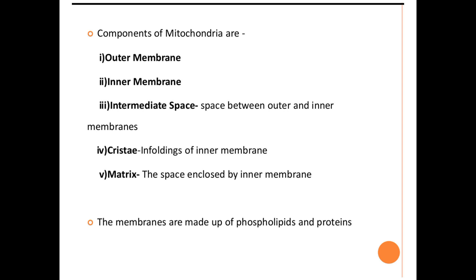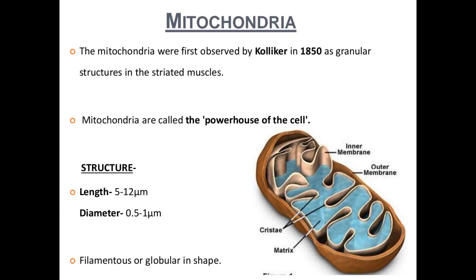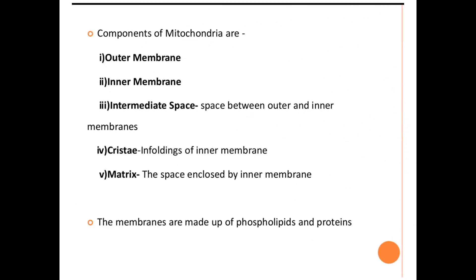The components of mitochondria are: outer membrane, inner membrane, intermediate space, cristae, and matrix — five components in total. The intermediate space is the space between the outer and inner membrane. You can see all these components — inner membrane, outer membrane, cristae, and matrix — with the space between the inner membrane and outer membrane called the intermediate space.